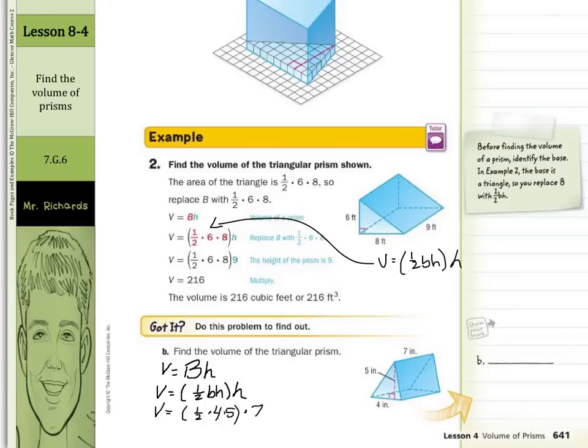So volume is going to equal ½ times 4 times 5 is 10, times 7, leaves us with 70. So 70 inches cubed is our answer for this problem. 70 inches to the third power.